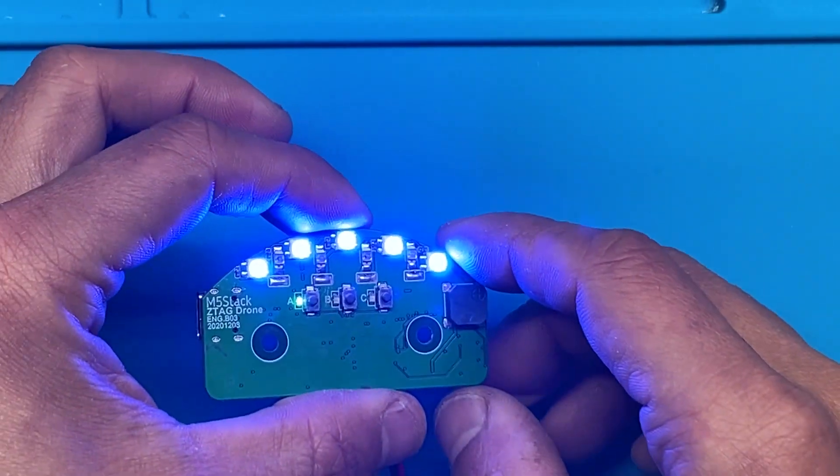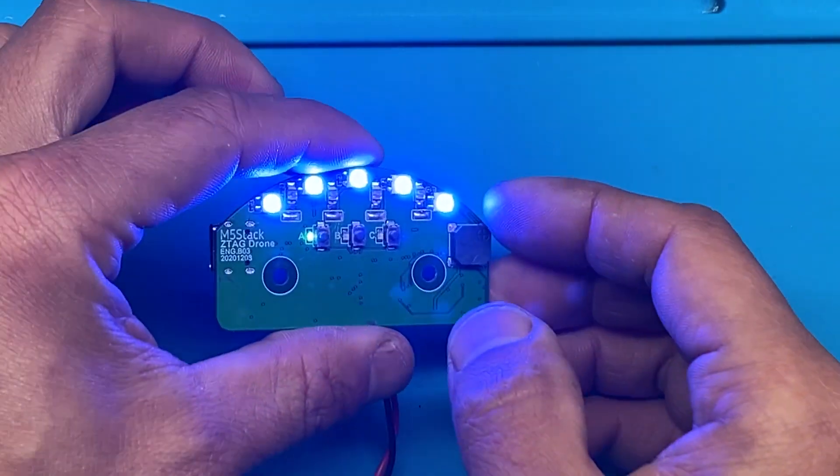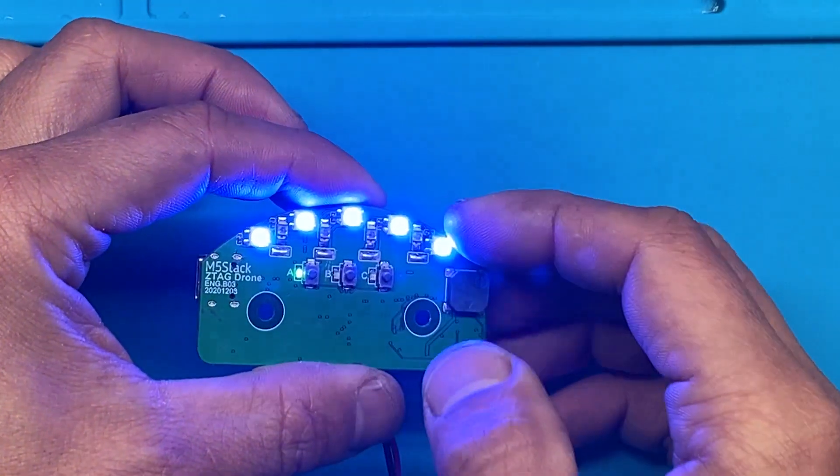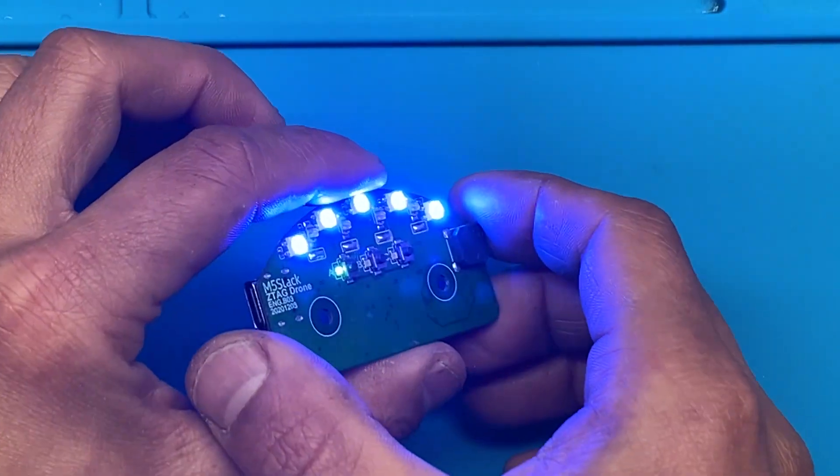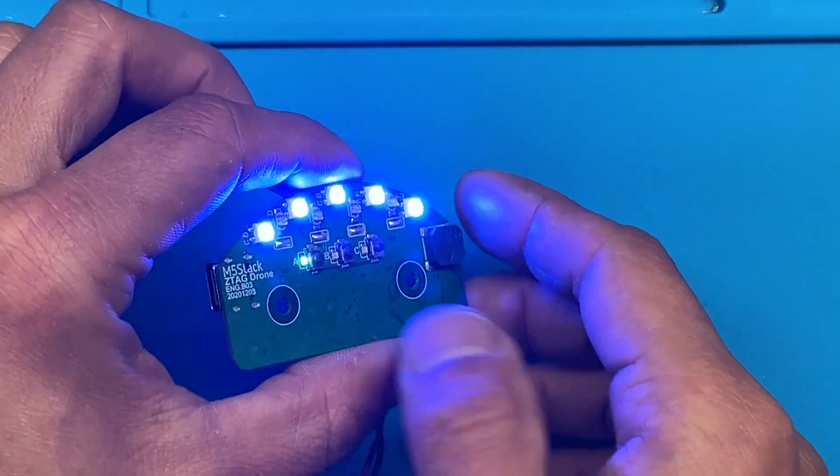These five lights are outward facing and they're your team indicator so that it shows other players who you are and whose team you're on.